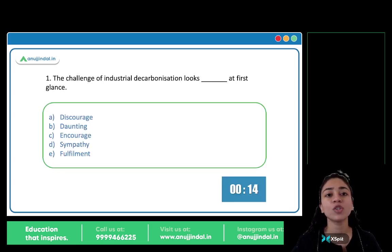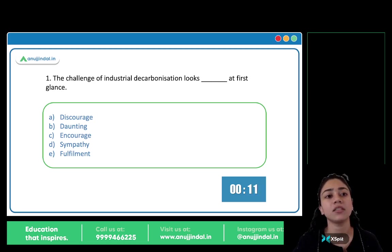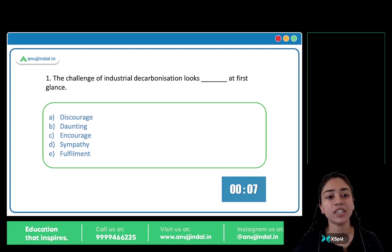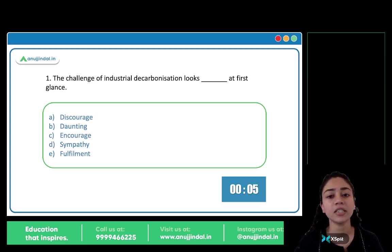The challenge of industrial decarbonization looks blank at first glance. Options: A) Discourage, B) Daunting, C) Encourage, D) Sympathy, E) Fulfillment.